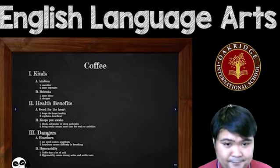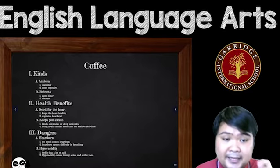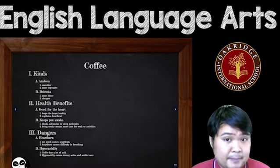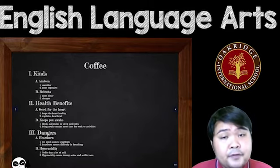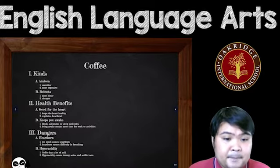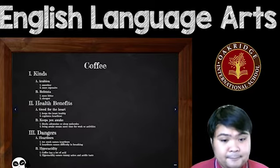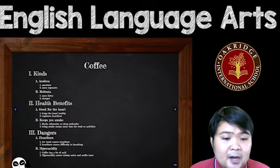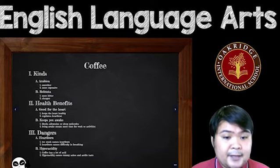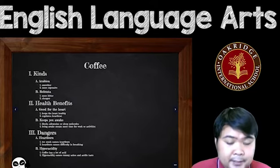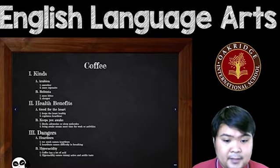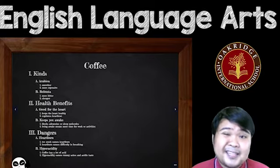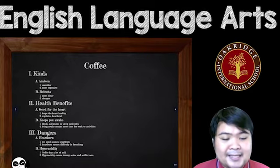And then for each of those subheadings, I have details. For example, Arabica is smoother and more expensive. Robusta is more bitter but cheaper. For 'good for the heart,' it keeps the heart healthy and regulates your heartbeat. For 'keeps you awake,' it blocks adenosine or sleep molecules, and being awake means more time to work or do other activities. For heartburn: too much coffee causes heartburn, and heartburn causes difficulty breathing. For hyperacidity: coffee has a lot of acid, and hyperacidity causes tummy aches and an acidic taste.